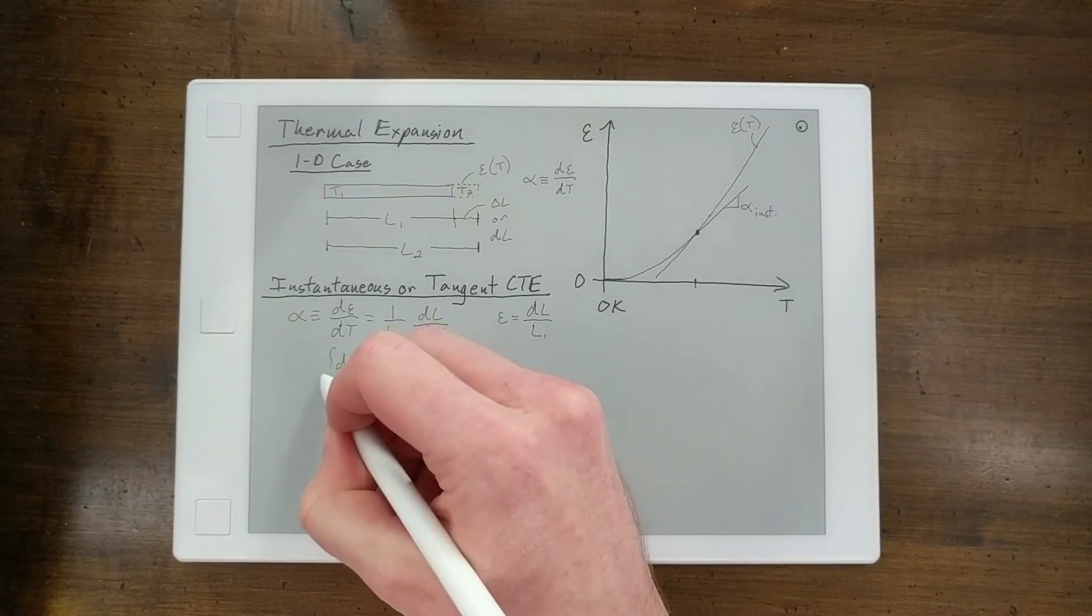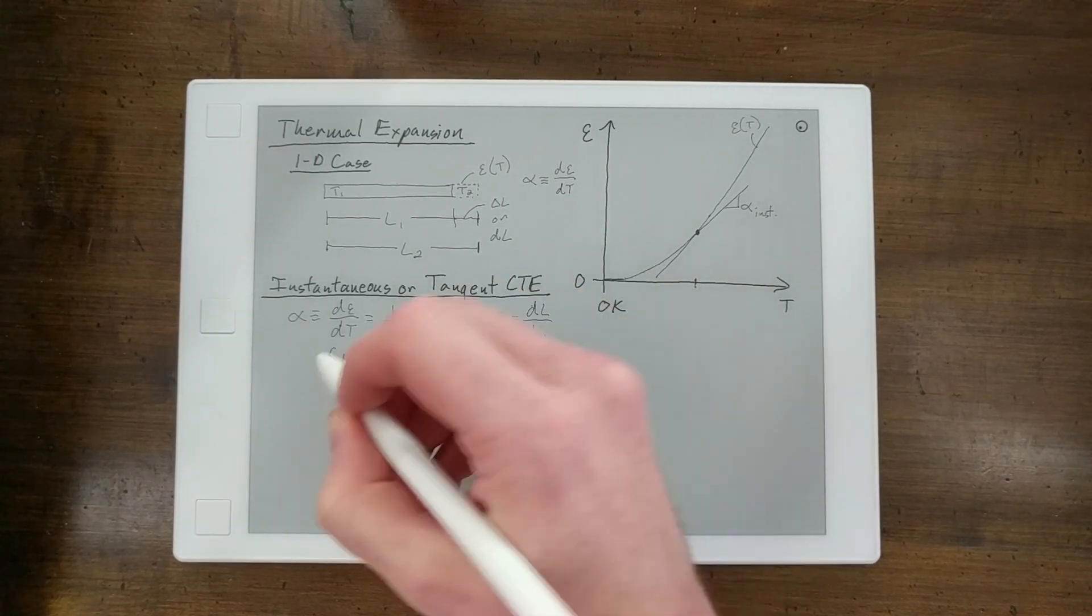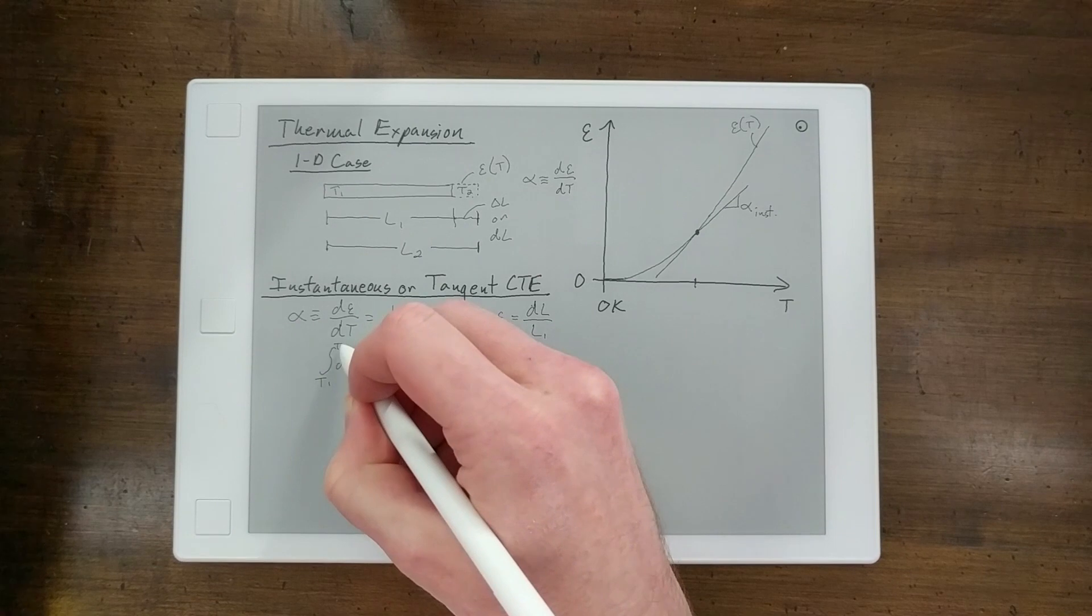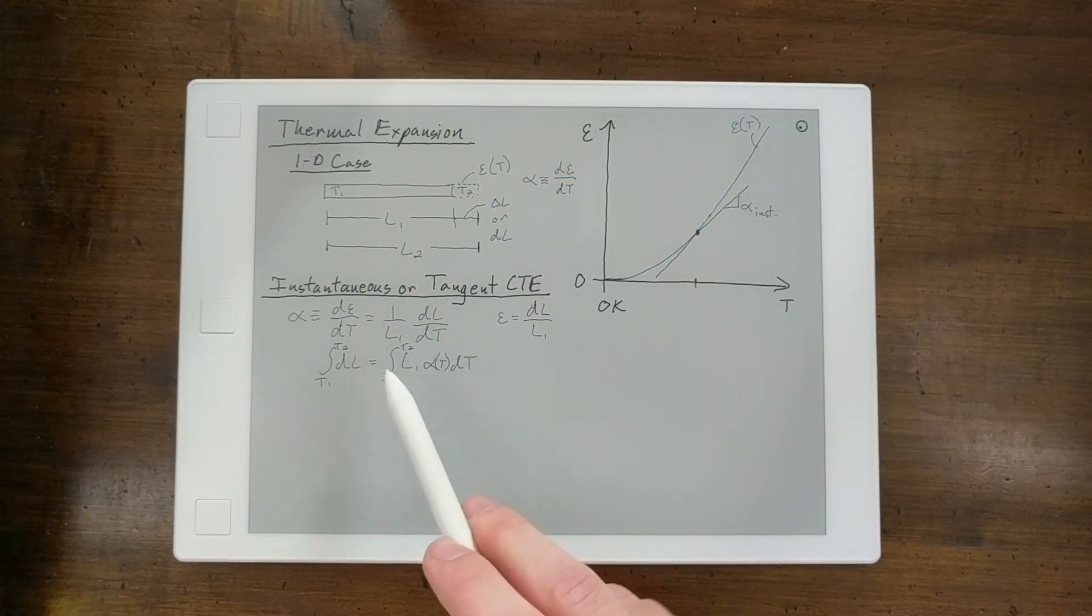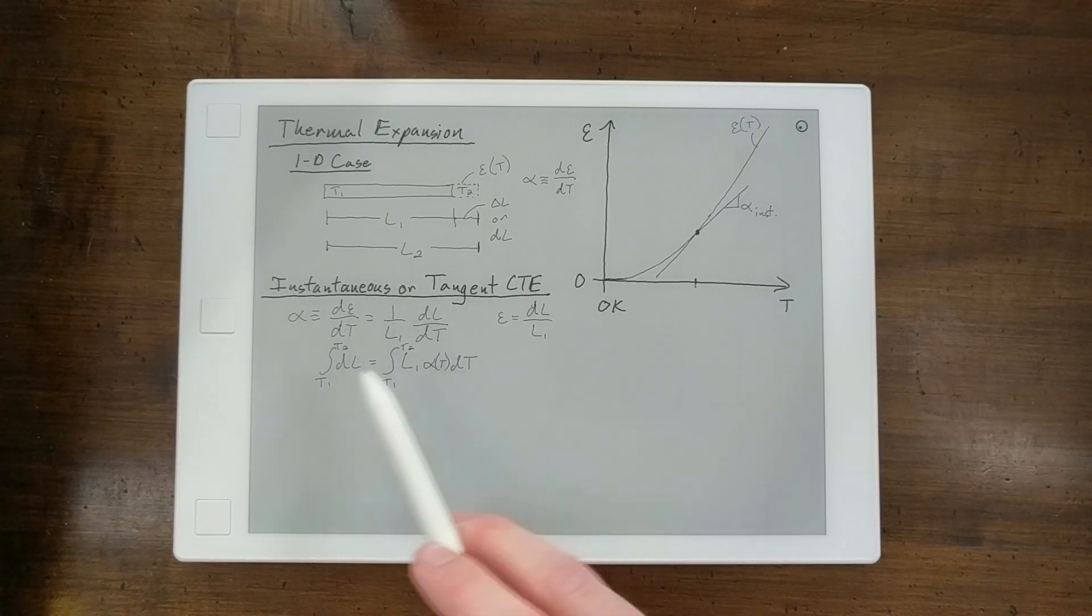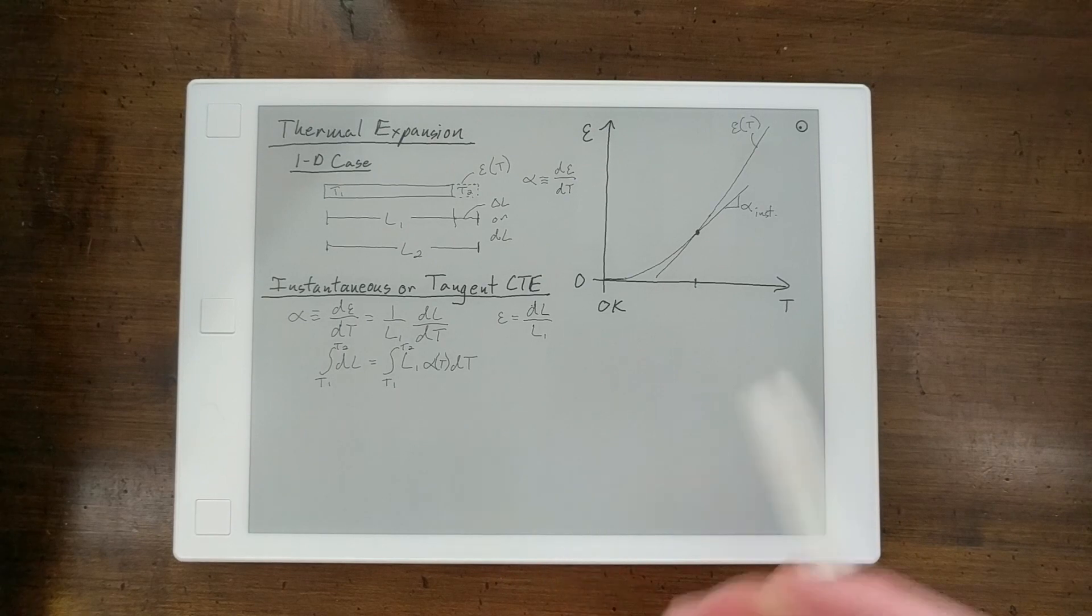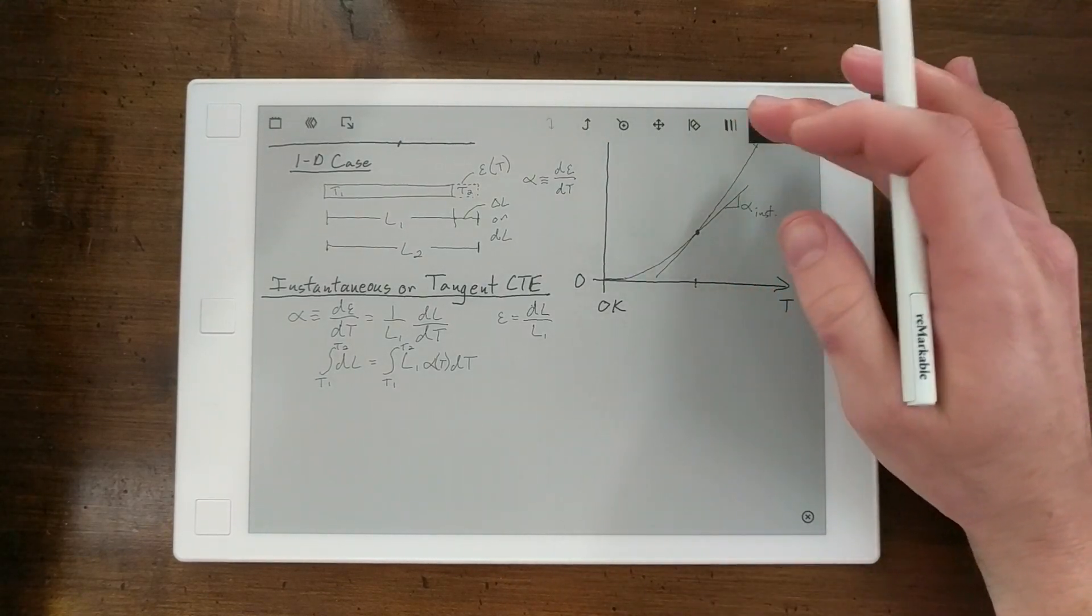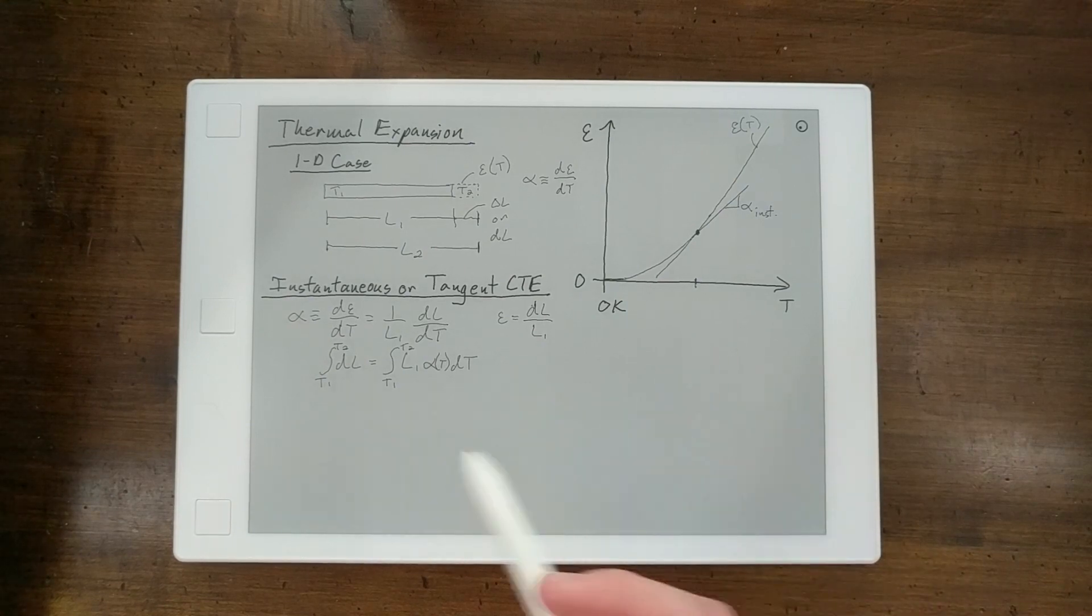So to solve this equation, you would need to integrate between T1 and T2. So this gives you a more accurate representation of what's happening, but representing alpha in terms of a function and integrating is not that easy when you're trying to do simple back-of-the-envelope calculations, or even more in-depth calculations.